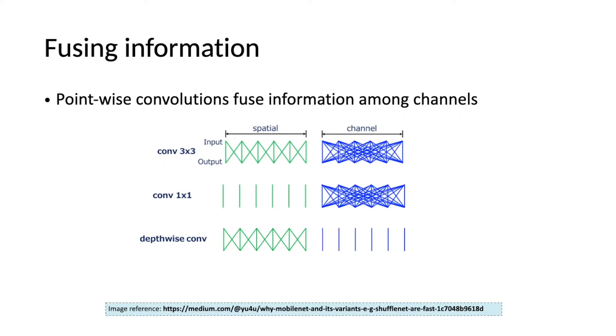Point-wise, or one-by-one convolutions, fuse information among channels. A more efficient network design for channel fusion should follow a few design principles.